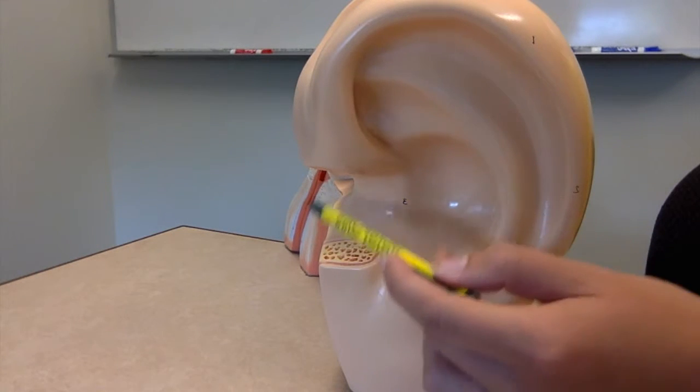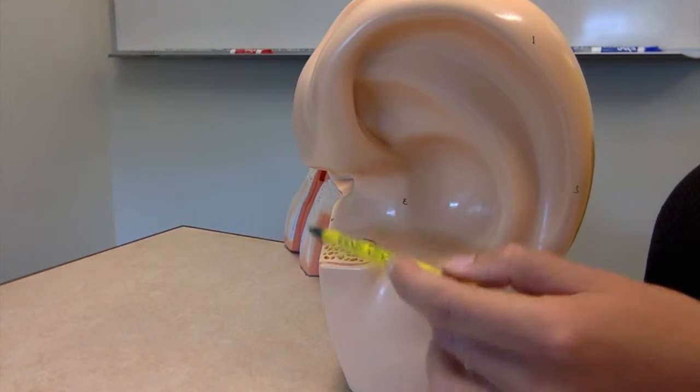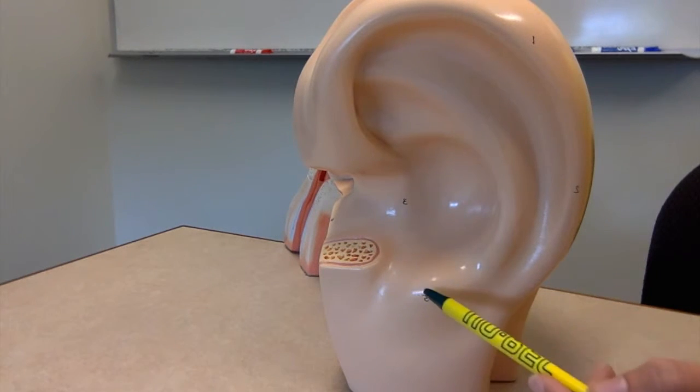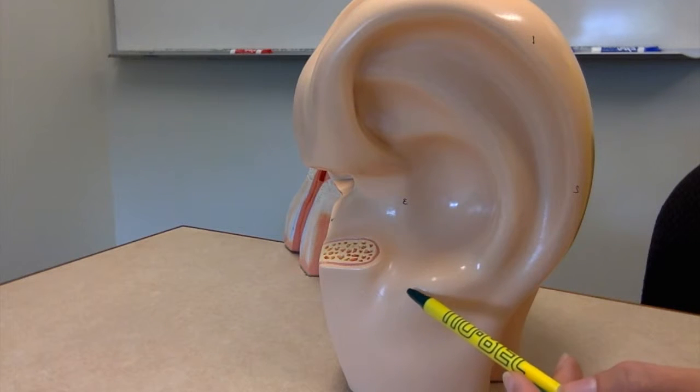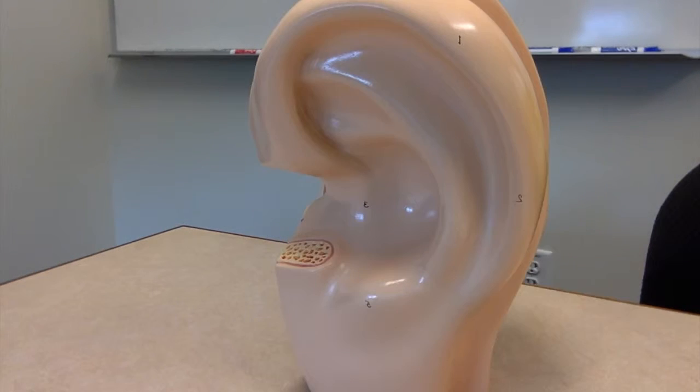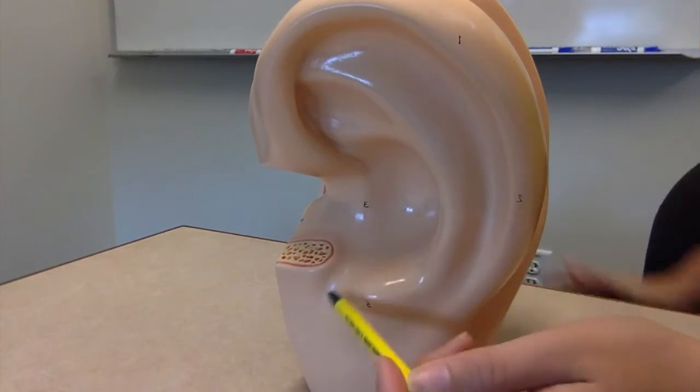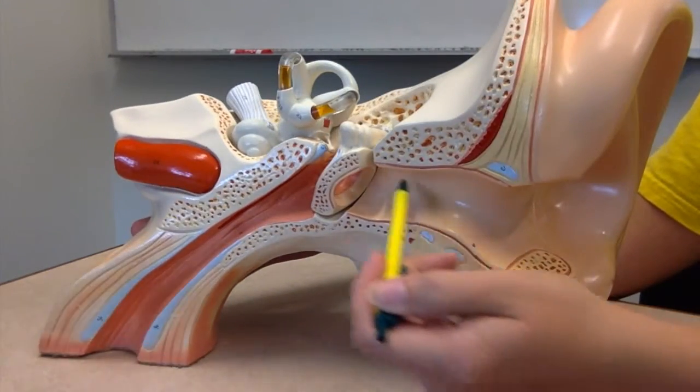which would typically be located around this area, the intertragal notch, the antitragus, the earlobe, the cavum concha, and then the external auditory meatus, or the EAM.